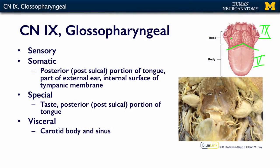There is also a special sensory component: taste. That covers the post-sulcal, posterior one-third of the tongue. Posterior one-third taste is cranial nerve 9, while taste for the anterior portion of the tongue is carried by cranial nerve 7.